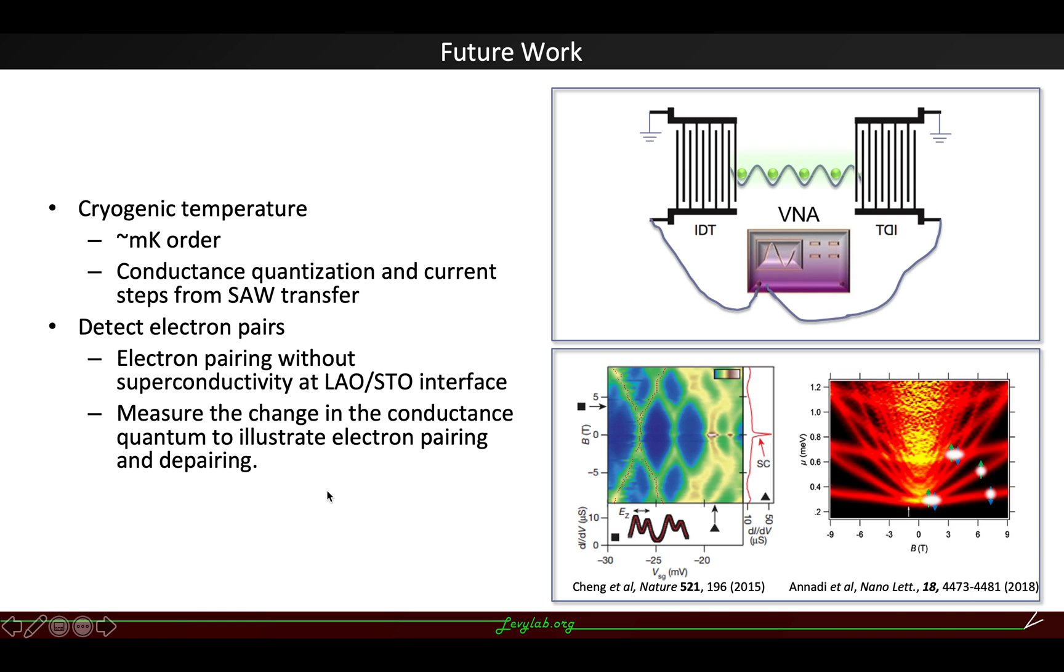More interestingly, we can couple this surface acoustic wave device with the interesting properties of the LAO/STO. LAO/STO is a very correlated system which has electron pairing without superconductivity at the LAO/STO interface. We can try to measure the change in the conductance quantum to illustrate electron pairing and depairing.